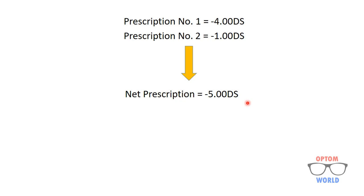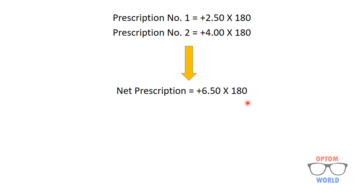Next we have only cylinder in the prescription with the same sign and same axis. Prescription number one is plus two point five zero at 180 and prescription number two is plus four at 180. Again in this case we simply add the two numbers, giving a net prescription of plus six point five zero at 180.